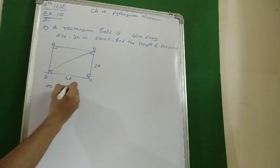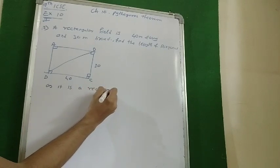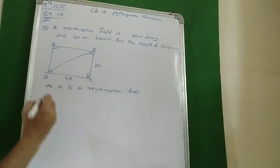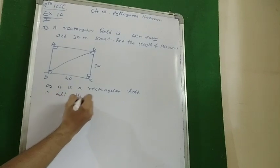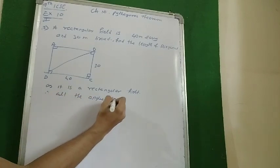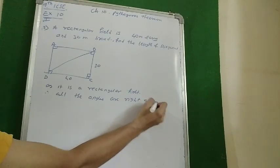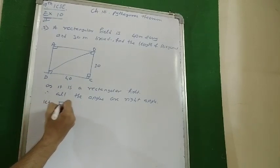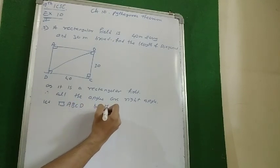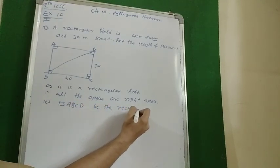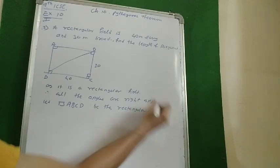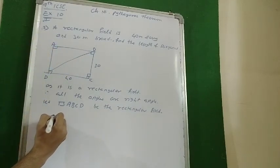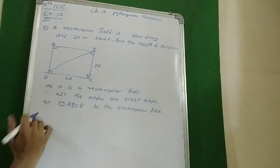As it is a rectangular field, all the angles are right angles. Let quadrilateral A, B, C, D be the rectangular field. We can say that the diagonal BD squared, by Pythagoras theorem, equals the sum of the squares of the two sides.